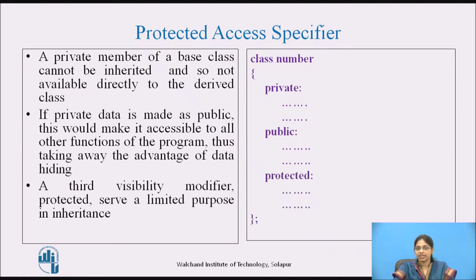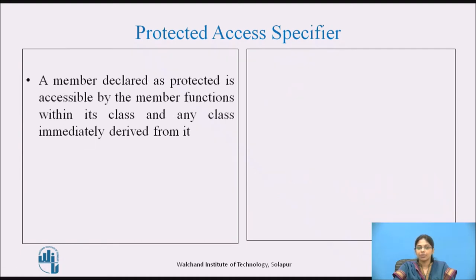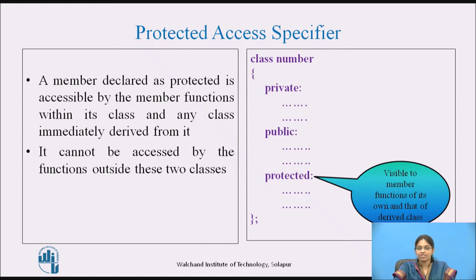A member declared as protected is accessible by the member functions within its class and any class immediately derived from it. It cannot be accessed by functions outside these two classes. A protected member is visible to the member functions of its own class and that of the derived class — it is only available within the base class and the derived class, and is not accessible outside these two.